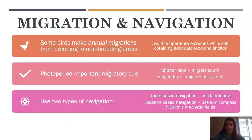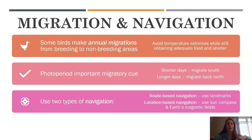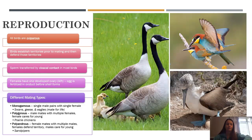Birds also migrate annually, specifically from breeding to non-breeding areas. This helps them avoid temperature extremes while still getting the food and shelter they need. The photoperiod is their typical migratory cue, and they use two different types of navigation — either landmarks, or magnetic fields and the sun's compass.